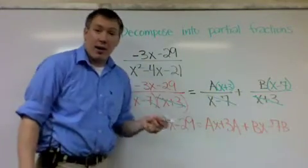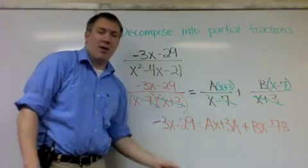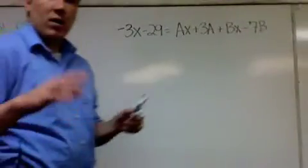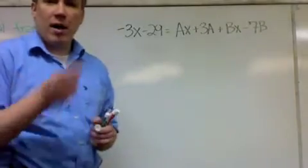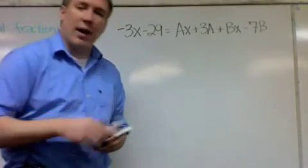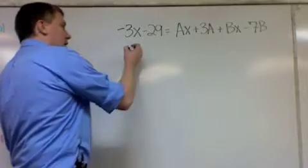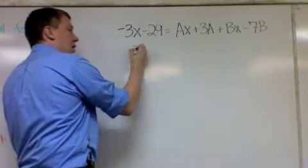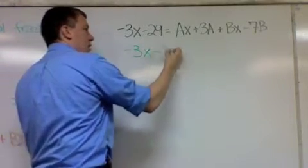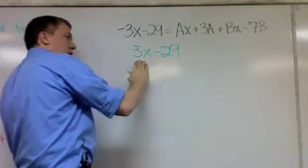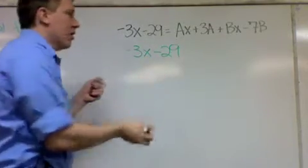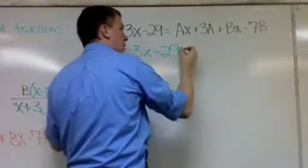All right. And now we're going to use this to solve. So before we go back there, I need to rearrange some of the order of things. I'm going to write negative 3x minus 29. This is going to be the same. You notice the x's are first and the numbers are second.